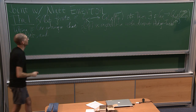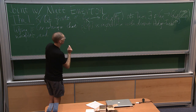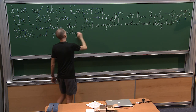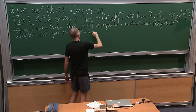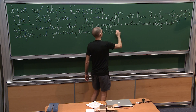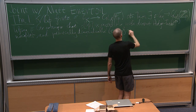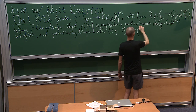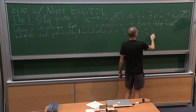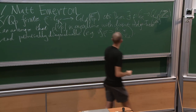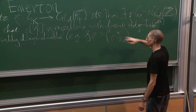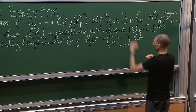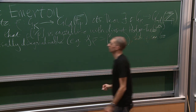Furthermore, you can arrange that the lift is what's called potentially diagonalisable. A particular case: if rho-bar is an extension of characters — some filtration by one-dimensional subquotients — then you can arrange that rho can also be of this form, i.e., ordinary. Ordinary means the lift is a successive extension of characters with strictly increasing Hodge-Tate weights. This is sometimes very useful in practice.